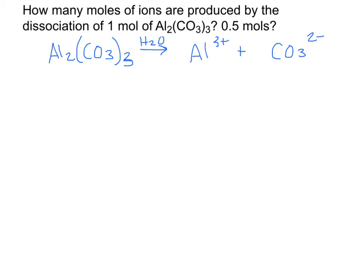Now we have to balance before we can answer any questions. On the left-hand side we have two aluminum, so I'm going to put a coefficient of two here. On the left we have three carbonates. When balancing an equation with compounds, don't worry about individual carbon and oxygen, just worry about the whole carbonate. We have three carbonates on the other side, now we're balanced.